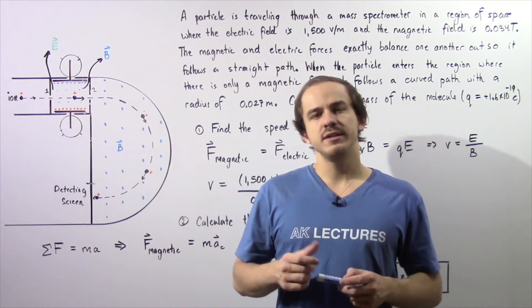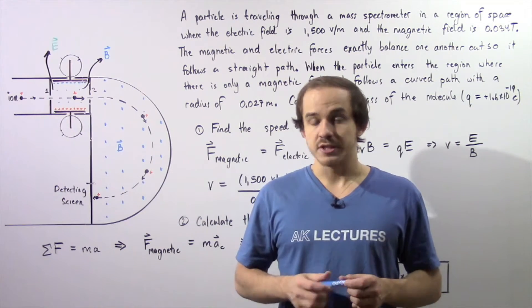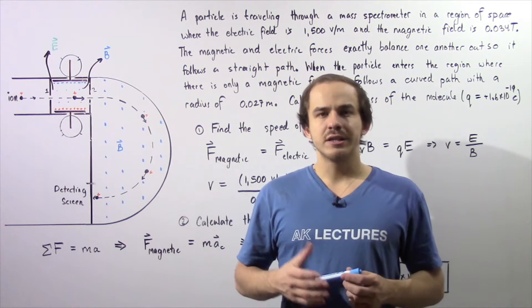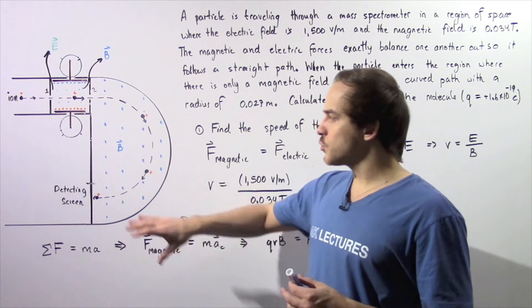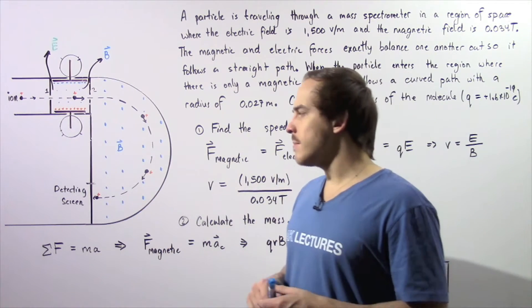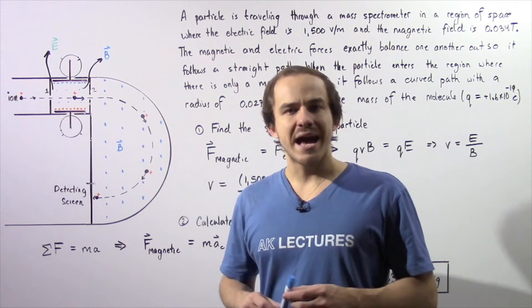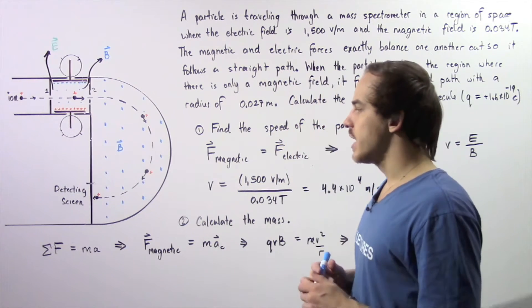In the previous lecture, we discussed the mass spectrometer. Now let's look at the following example in which we're going to use the mass spectrometer to determine what the mass is of a certain particle.